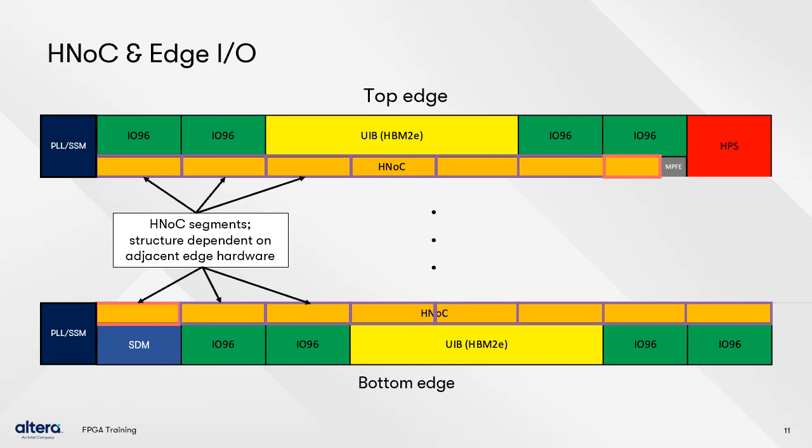Note that IO96 banks are referred to as GPIOB blocks in some documentation. Unique segments are highlighted in red. The segment closest to the HPS on the top edge has one less available access port from the fabric, since this part of the segment is used for exclusive access by the HPS to access the NOC and the adjacent IO96 bank. The segment on the bottom edge next to the Secure Device Manager, or SDM, only has a single fabric port. There are no GPIO at the SDM block, and all SDM signals bypass the NOC, so this segment is only used to make horizontal connections to the adjacent PLL-SSM segment and the rest of the bottom HNOC.